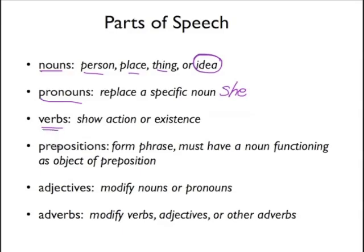Verbs are a very important part of a sentence — we can't do anything without a verb. Remember that verbs fall into two categories: action verbs, which are probably the easiest to recognize — where you can clearly visualize someone doing that, like running, jumping, or smashing — but there are also the verbs of existence, which you can't necessarily see someone doing. The most common verb of existence is of course 'be' and all of its forms.